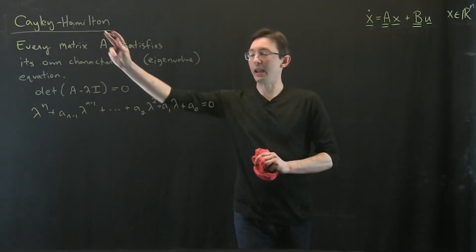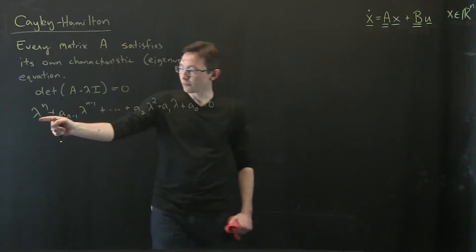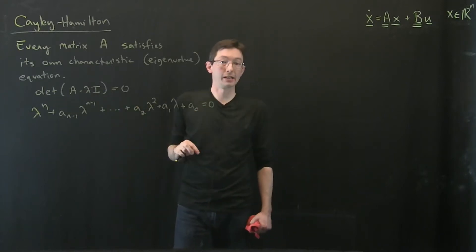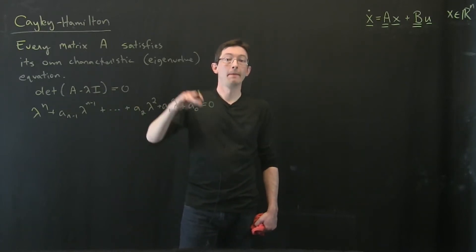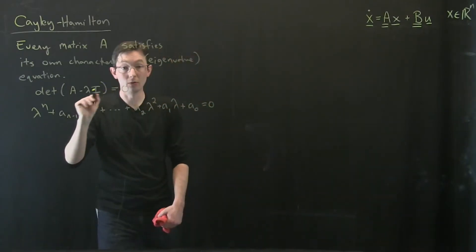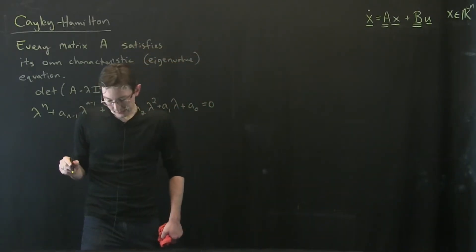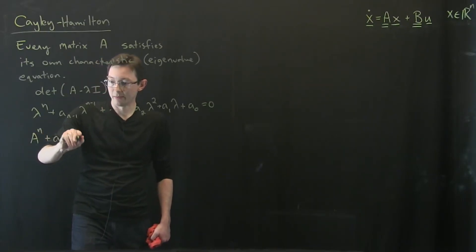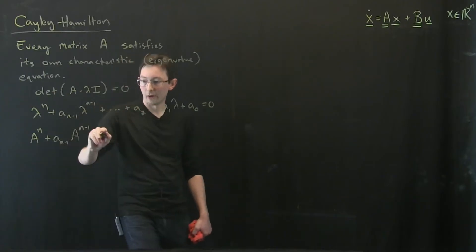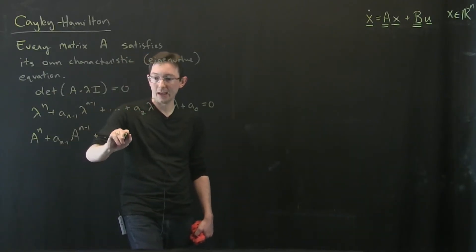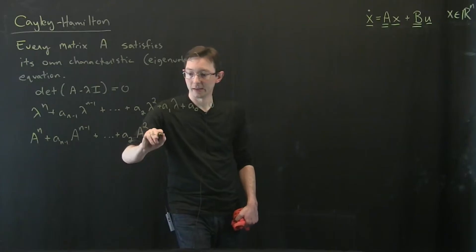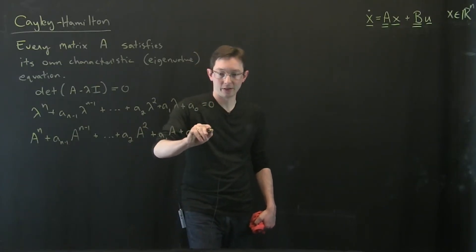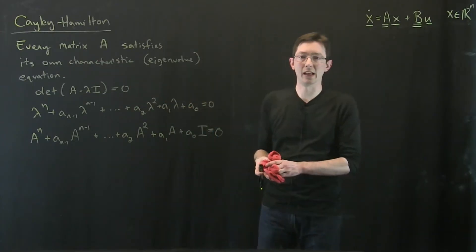This is remarkable. So Cayley-Hamilton says if I plug in A everywhere I see a lambda, this is also satisfied. It's a matrix equation. So the A matrix satisfies its own characteristic equation. So if I write A^n plus little a_{n-1} to the big matrix A^{n-1} plus dot dot dot plus a_2 matrix squared plus a_1 matrix plus a_0 times the identity matrix, that equals zero for every square matrix A.